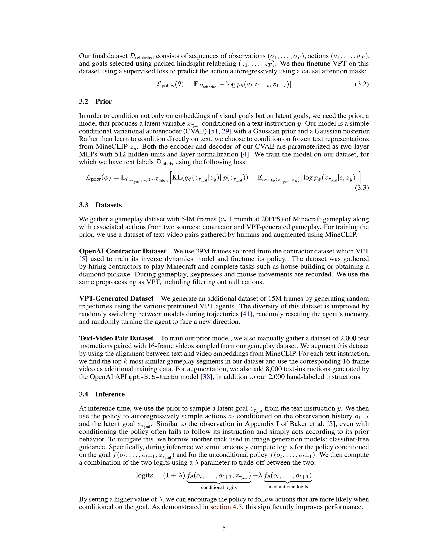We need to create a model that can generate a latent variable Z_tau_goal based on a given text instruction Y. This is what we refer to as the prior. Our model is a simple conditional variational autoencoder (CVAE), which uses a Gaussian prior and a Gaussian posterior. Instead of teaching the model to directly condition on text, we decided to condition on fixed text representations from MineClip. Our CVAE's encoder and decoder are both designed as two-layer MLPs (multi-layer perceptrons) with 512 hidden units and layer normalization.